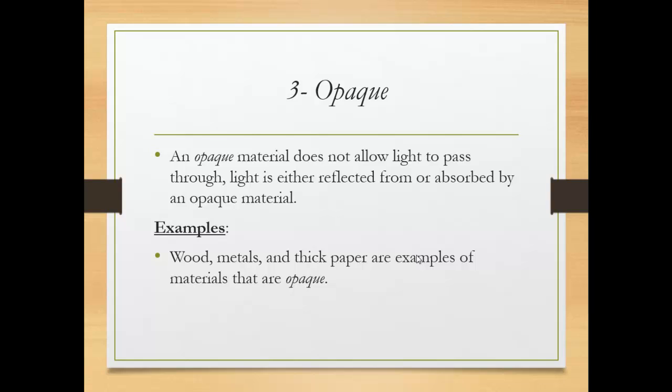And the third one, opaque material. Doesn't allow any light to pass through it or reflect from it. Frosted glass, like wood, like metal, like thick paper, are examples of materials that are opaque material.